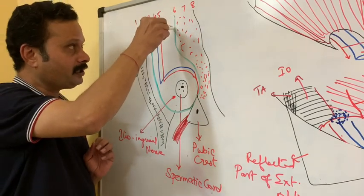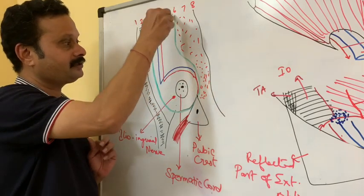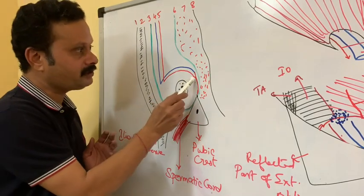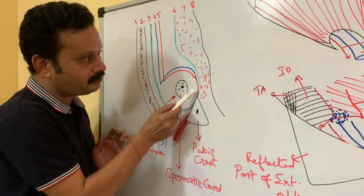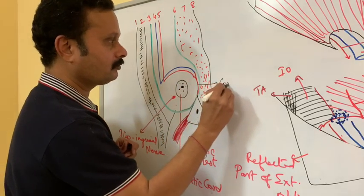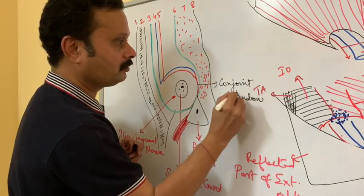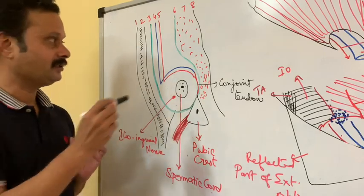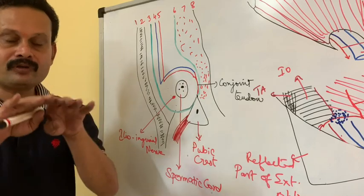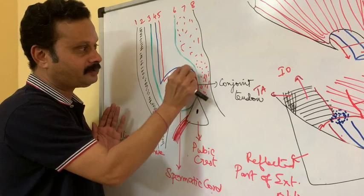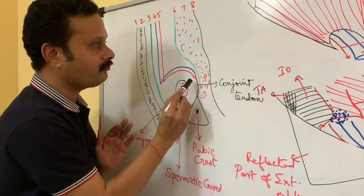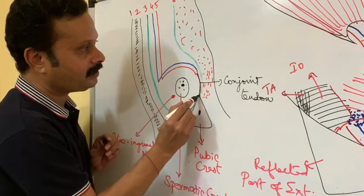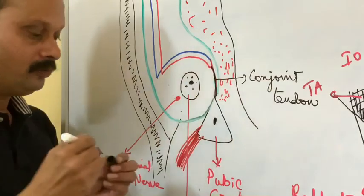The posterior wall is formed entirely by the fascia transversalis. In its medial one-third, the posterior wall is also formed by the conjoint tendon. The conjoint tendon is formed by the fusion of the internal oblique and transversus abdominis muscles. These two muscles form the roof before fusion; once they come onto the posterior aspect of the inguinal canal, they fuse to form a tendon called the conjoint tendon, which forms the medial one-third of the posterior wall.